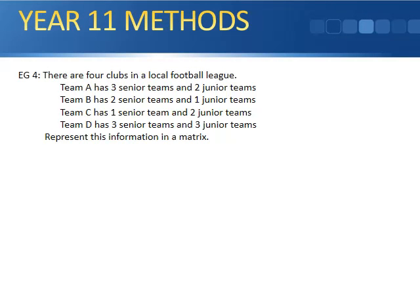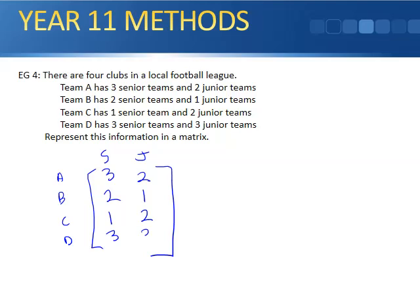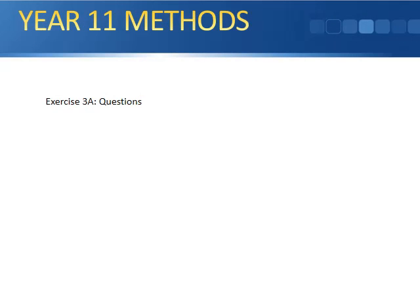Example four says there are four clubs in the local football league. Team A has three senior teams and two junior teams. Team B has two senior teams, one junior team. Team C has one senior team, two junior teams. And Team D has three senior teams and three junior teams. Represent this information in the matrix. So we will put team A, team B, team C, team D. S for the senior, J for the junior. Draw up my matrix. This one has three and two. Team B has two and one. Team C has one and two. Team D has three and three. And therefore we have a matrix for this club.